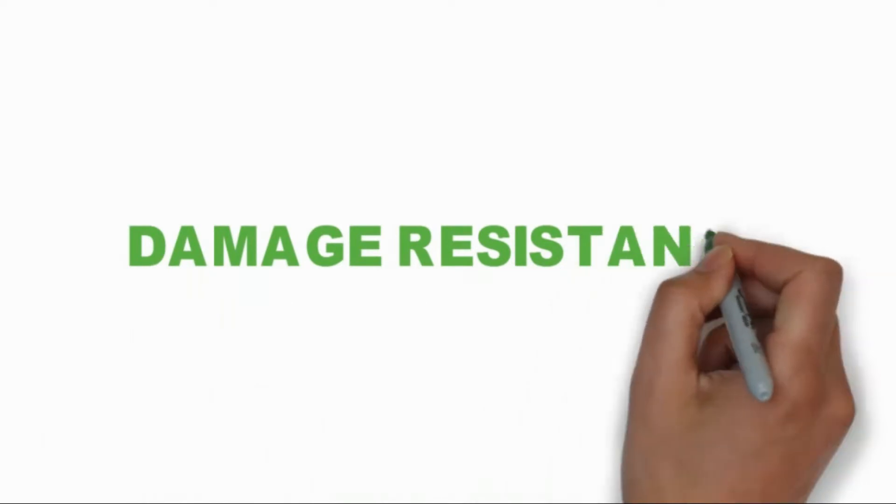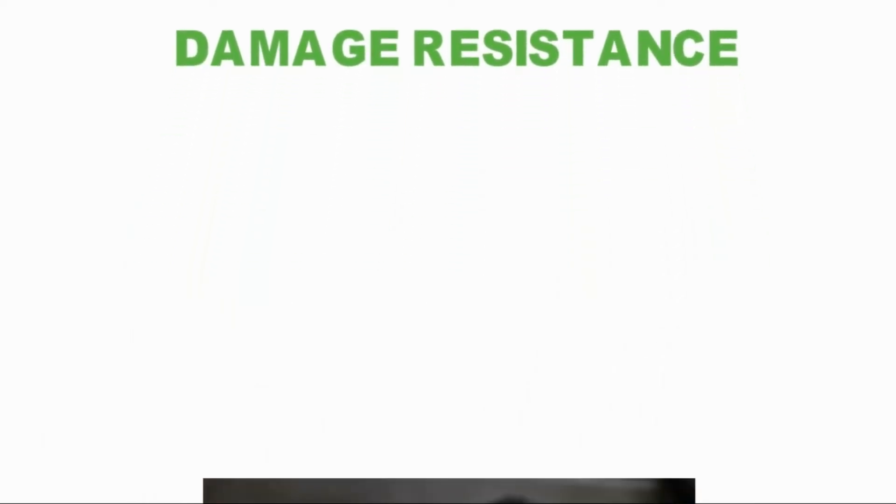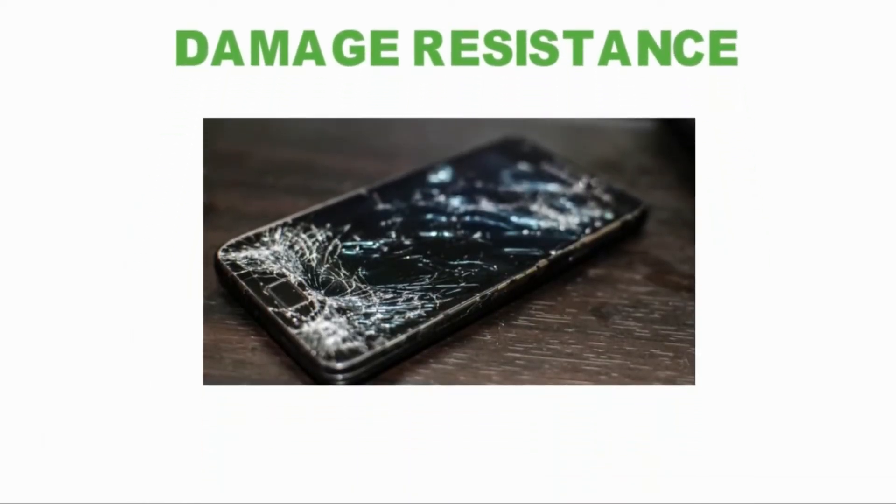Damage Resistance. Gorilla Glass is chemically strengthened through an ion exchange process that creates a deep compression layer on the surface of the glass substrate. This layer acts as armor to reduce the introduction of flaws.